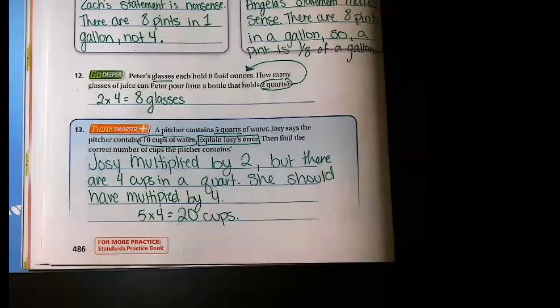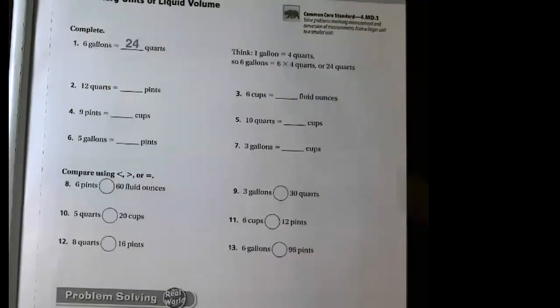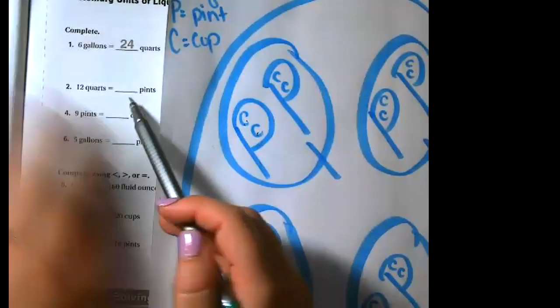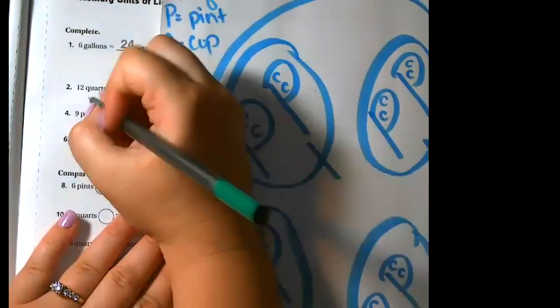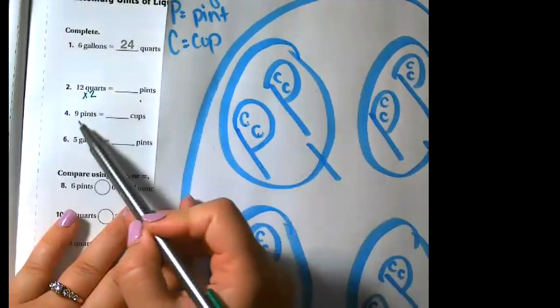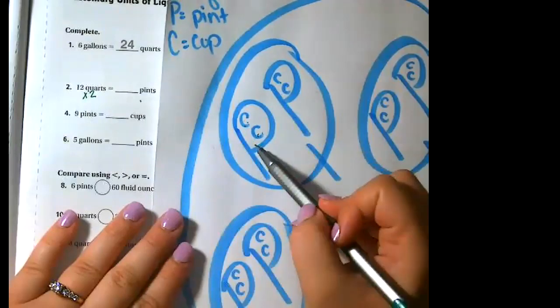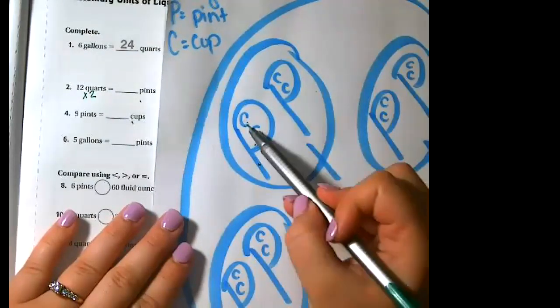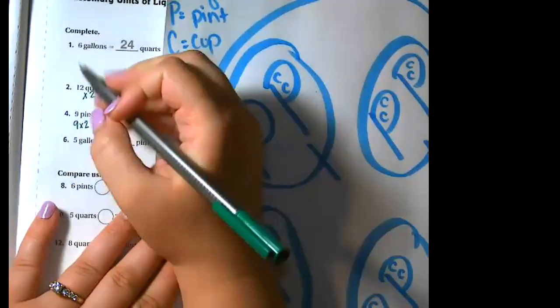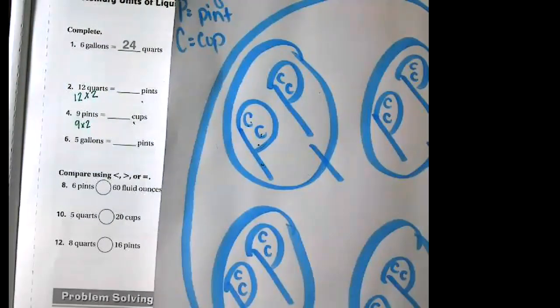That is it for this lesson. You will be working on the homework page. In the first section, you're changing one unit of measurement to another — you can use your chart to help. So if I'm going from quarts to pints, I look at my chart, see how many P's are inside the Q — I see two — so that's what I multiply this number by. If I'm doing nine pints to cups, I look inside one P and see how many C's — one, two — so I multiply my nine by two.